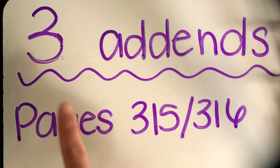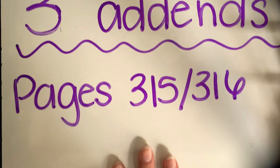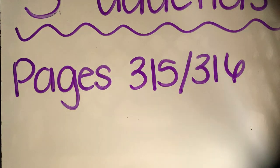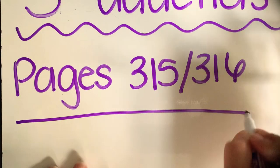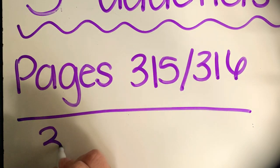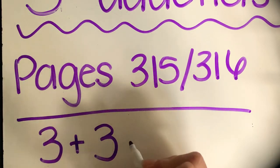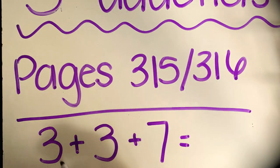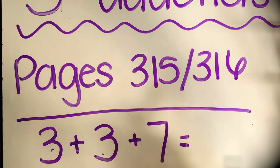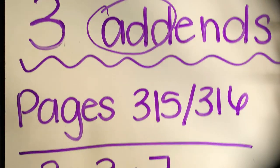Just remember that three addends means we're still adding, but we're taking three numbers and adding them together. So it would look something like this - one, two, three numbers that we are adding together.